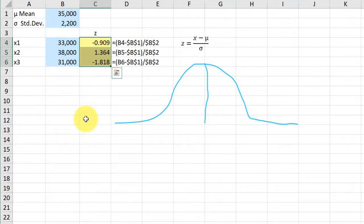I always recommend my students draw a curve. Now, this is a very rough curve here. The middle would be the mean of 35,000, and the first x-value is 33,000, so that's somewhere in here.